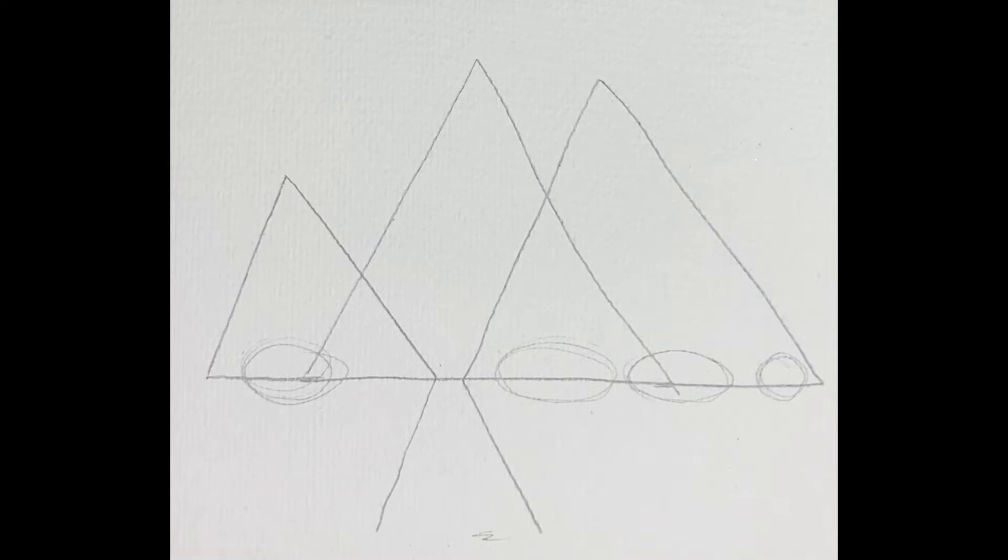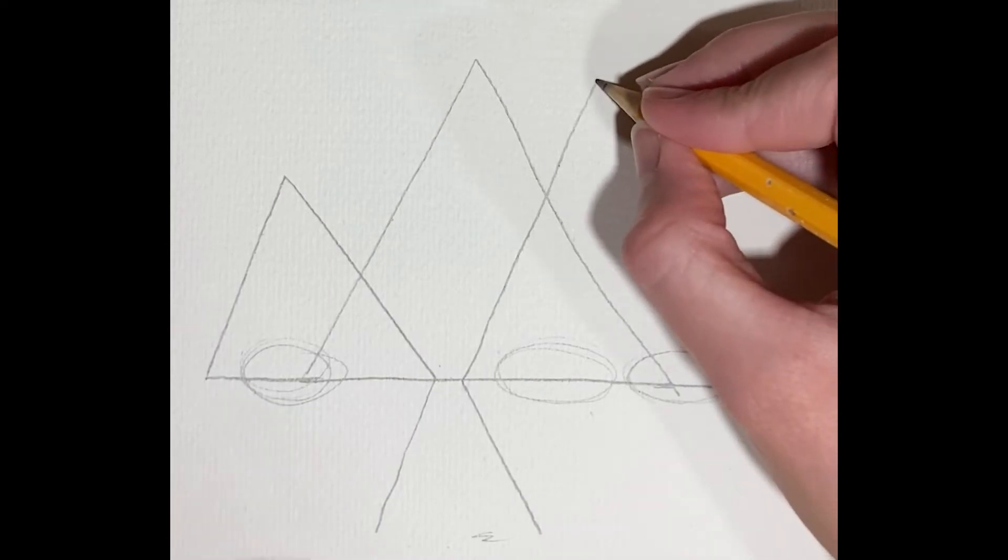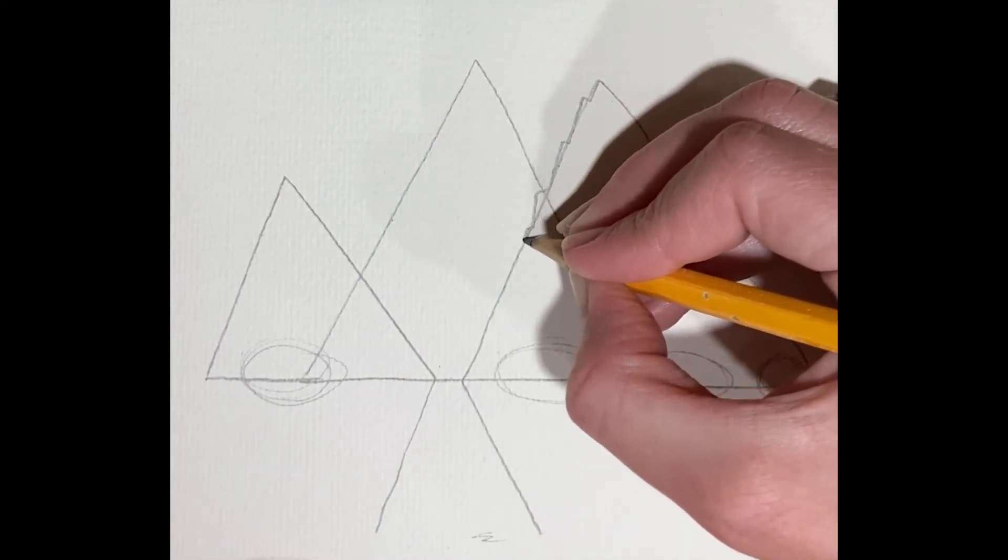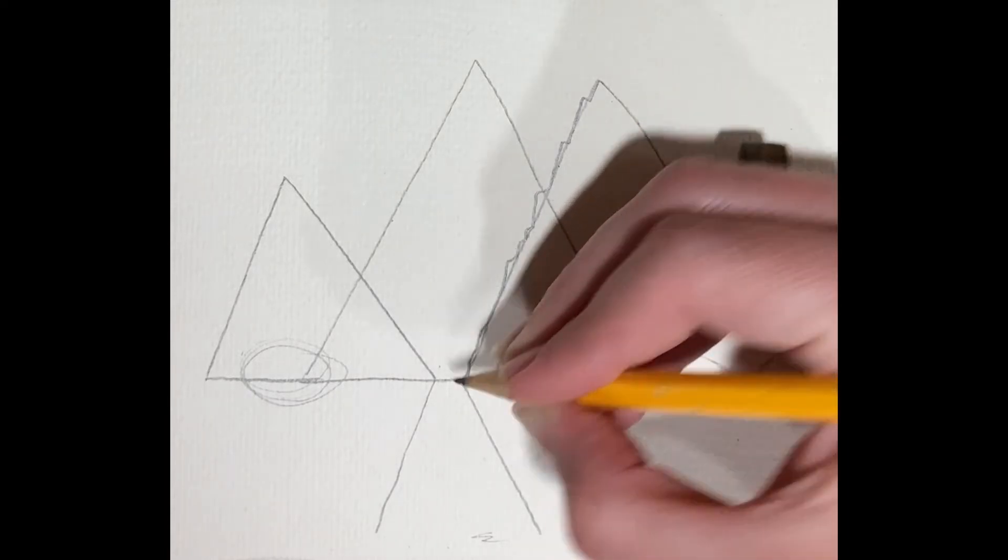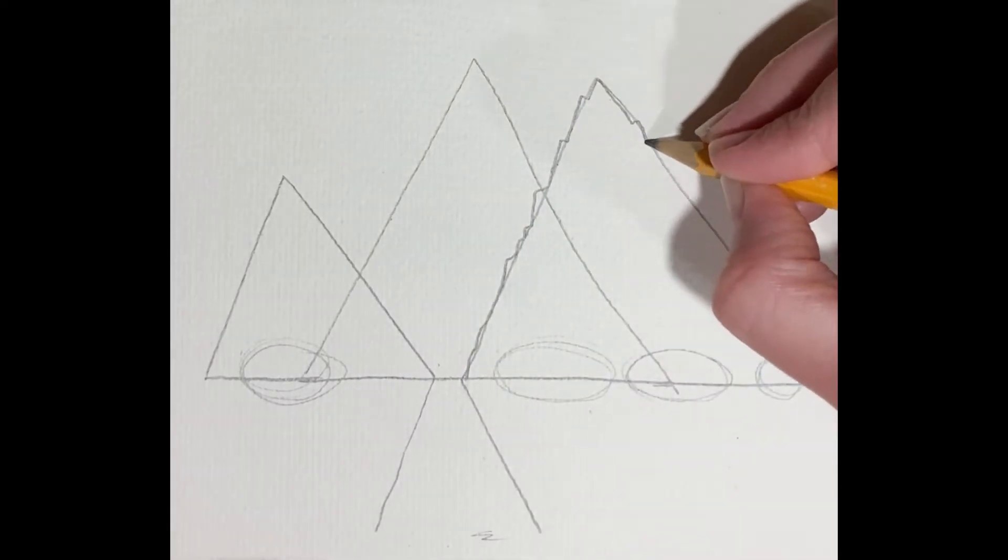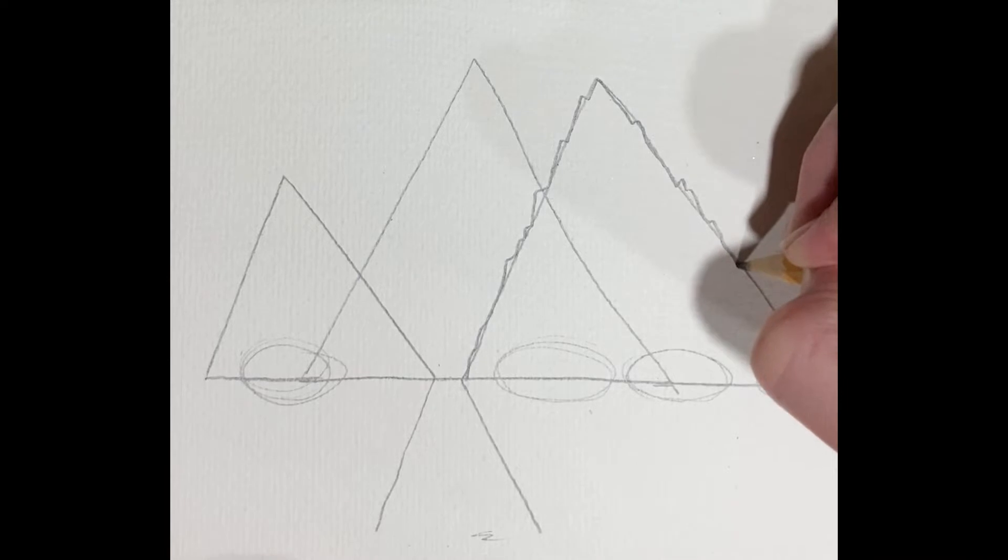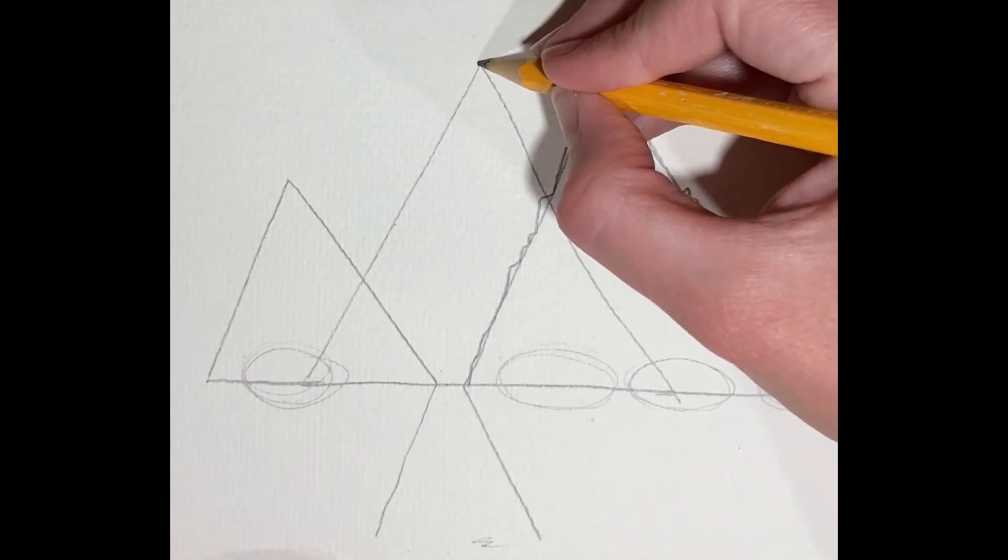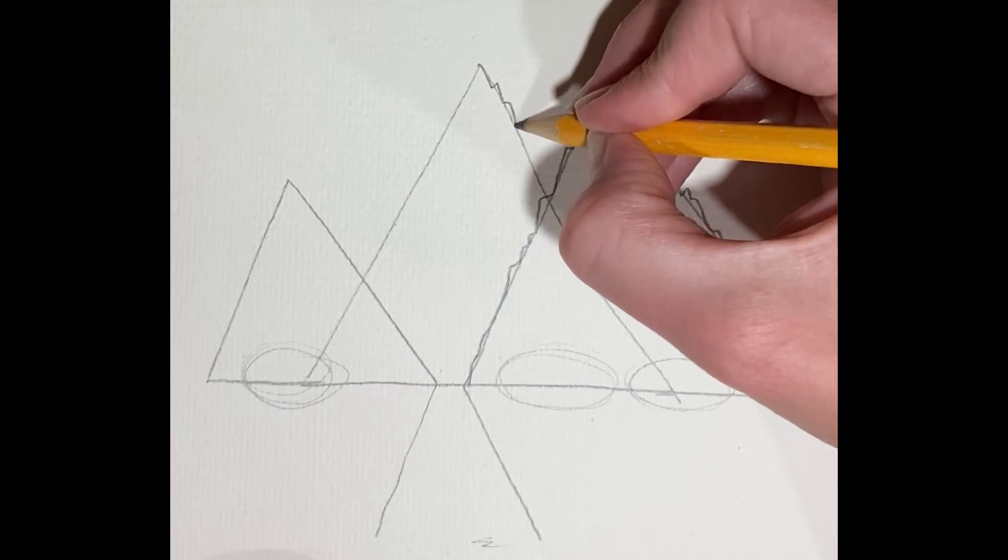Okay, so we've got all of our major shapes. Next step is to give this a little character. So I want to make these rugged looking mountains, so I'm making the edges kind of jagged, not in any particular way. Just move my hand around, so you try it out in the same way.